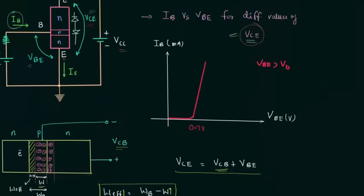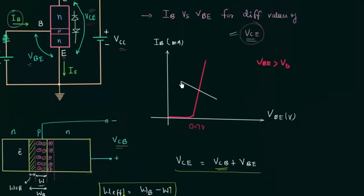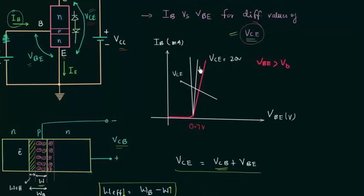Now we can complete the input characteristics of the common emitter transistor. On decreasing the output voltage VCE, the base current or input current IB increases. For example, one characteristic is for VCE equal to 20V, another for VCE equal to 10V, and another for VCE equal to 1V. So on decreasing VCE, IB increases. The y-axis is in microamps. This is the final input characteristics of the common emitter transistor.